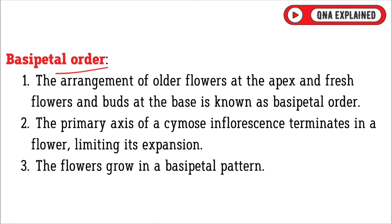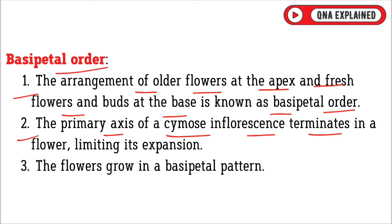Basipetal order: The arrangement of older flowers at the apex and fresh flowers and buds at the base is known as Basipetal order. The primary axis of a cymose inflorescence terminates in a flower, limiting its expansion. The flowers grow in a basipetal pattern.